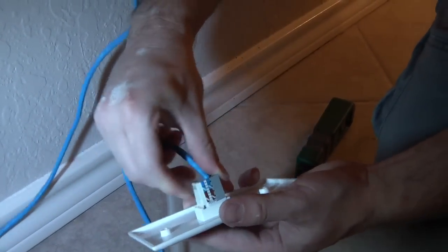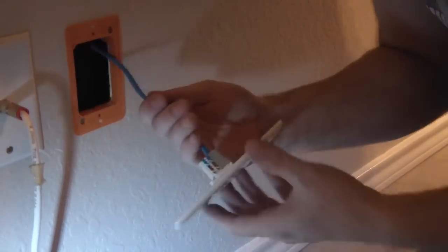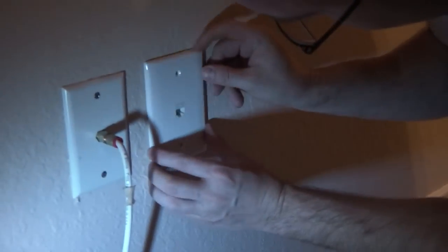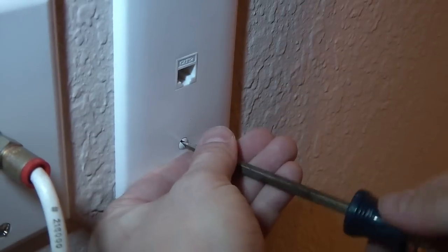Now you can mount the jack into the wall plate and push any excess wire back into the wall. Once you mount the plate to the wall, you are essentially done.